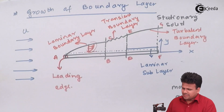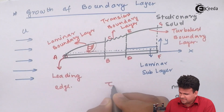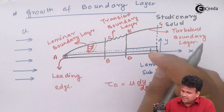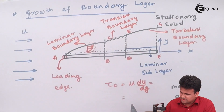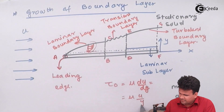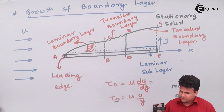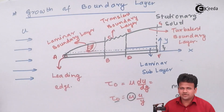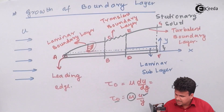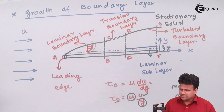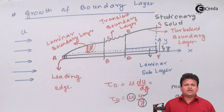In the laminar sub-layer, the shear stress tau-zero equals mu times du/dy. But in the sub-layer the velocity remains constant, so this simplifies to tau-zero equals mu times u divided by y. Here, tau-zero is the shear stress in the laminar sub-layer, mu is the dynamic viscosity, u is the constant velocity, and y is the thickness of the laminar sub-layer.